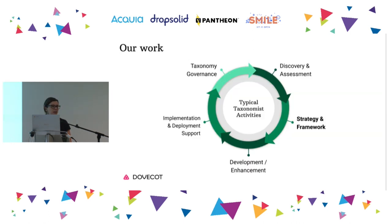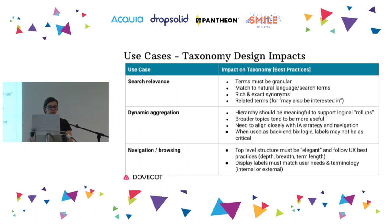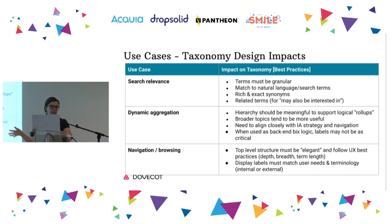Looking at the strategy — a lot of times people say 'we're going to have some taxonomy, whatever,' but really getting into what your taxonomy needs to do matters because there are different considerations for different use cases. If you're using it for search relevance, it needs to do different things than if you're using it for navigation and browsing. You might have a taxonomy that's completely behind the scenes driving an ontology that no one ever sees. You can do different things with that than one that's going to be in the left-hand column where people are clicking on it.